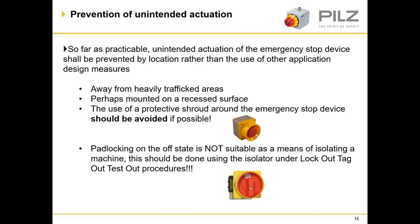Prevention of unintended actuation: so far as practicable, unintended actuation of the emergency stop device shall be prevented by location rather than other application design measures. Emergency stops should be positioned away from heavily trafficked areas, mounted perhaps on a recessed surface within the machine, but the recess should be big enough for a full hand to actuate the e-stop. The use of a protective shroud around e-stops should be avoided, as mentioned in standard 13850. Before shrouding an e-stop, you should consider the position and relocate it away from heavily trafficked areas where it could be triggered by accident.